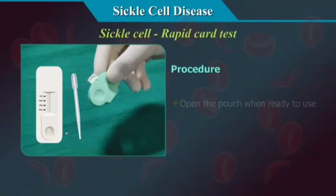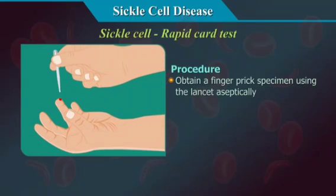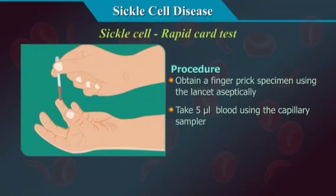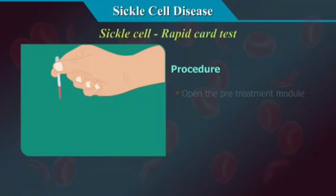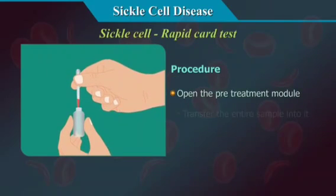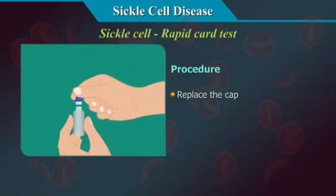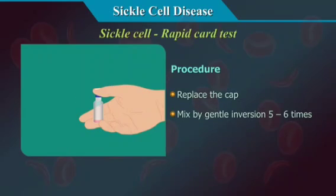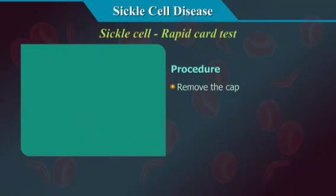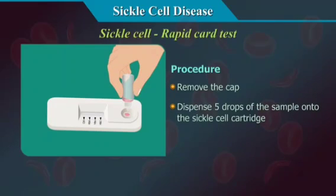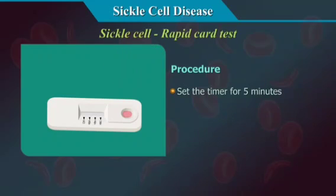Procedure: Open the pouch when ready to use. Obtain a finger prick specimen using the lancet aseptically. Take 5 µL of blood using the capillary sampler. Open the pre-treatment module and transfer the entire sample into it. Replace the cap and mix by gentle inversion 5 to 6 times. Remove the cap and dispense 5 drops of the sample onto the sickle scan cartridge. Set the timer for 5 minutes and take readings after 5 minutes.